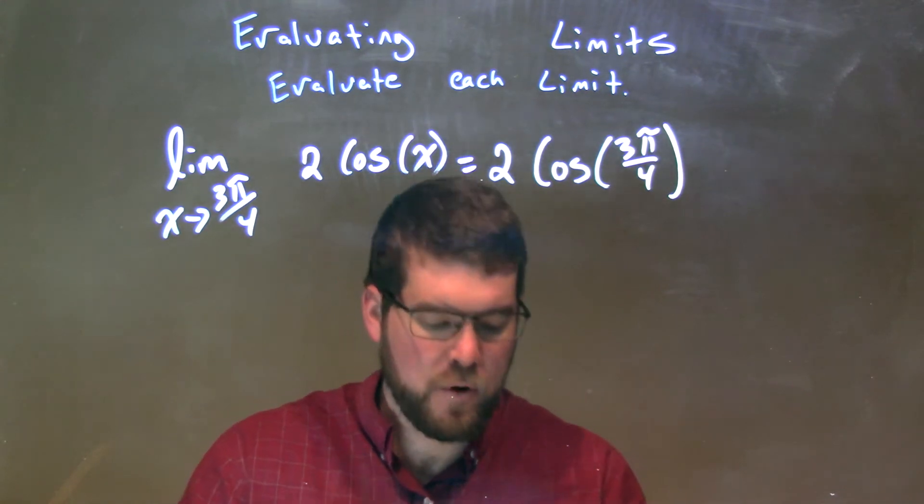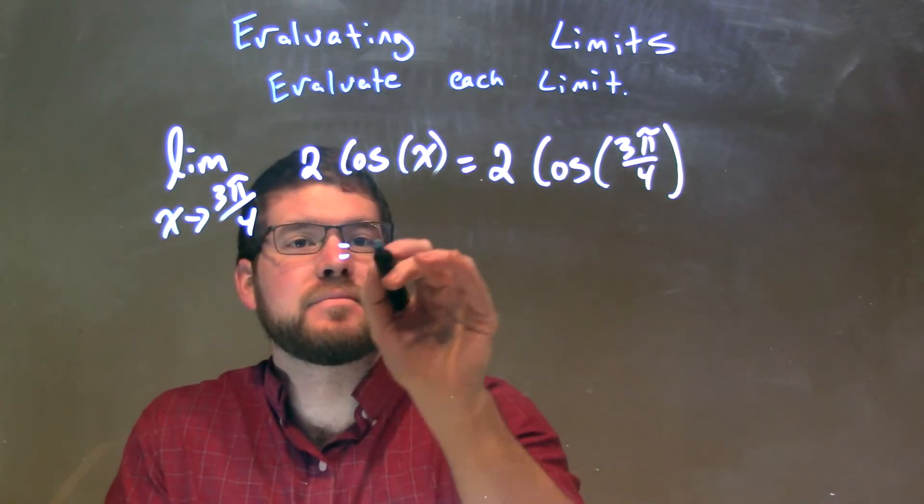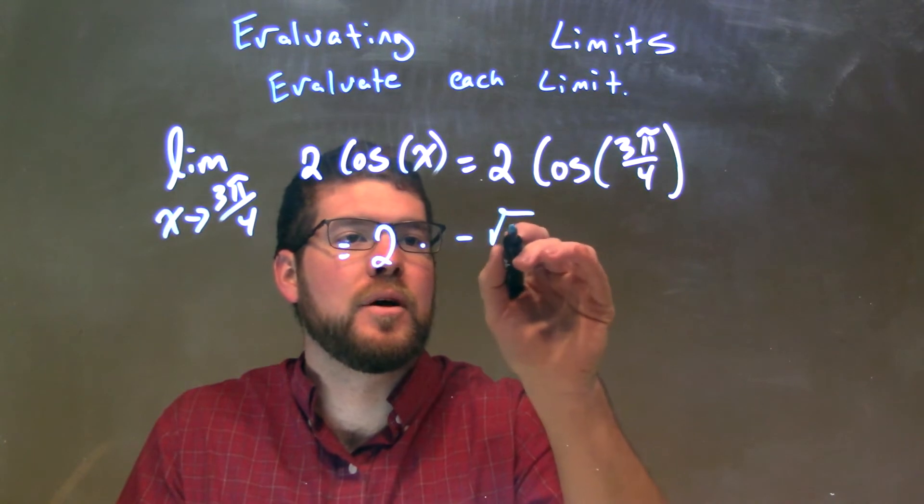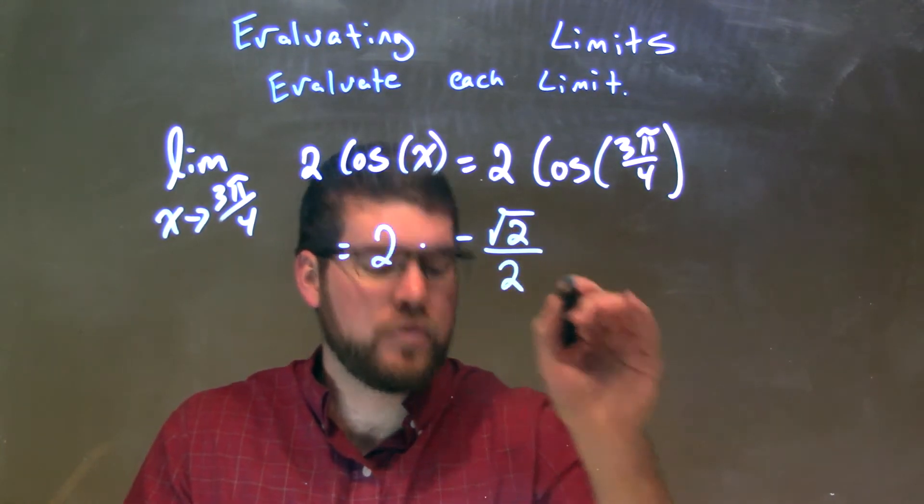Now, the cosine of 3π/4 is negative, and we know it's negative square root of 2 over 2.